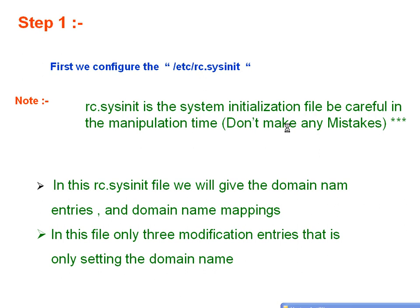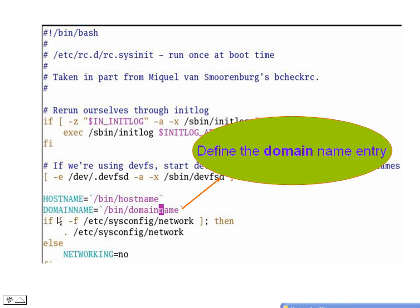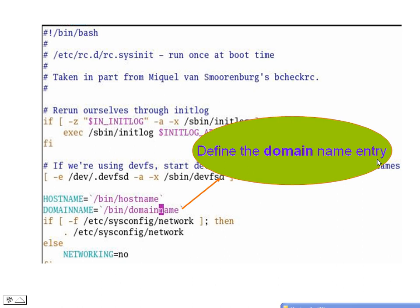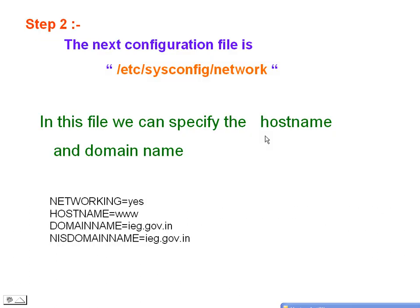The rc.sysinit is the system initialization file, so you should be very careful in manipulating it and not make any mistakes. In this rc.sysinit file we will give the domain name entries and domain name mappings — only three modification entries, which is just setting the domain name. For example, we have to modify: DOMAINNAME=/bin/domainname, which defines the domain name entry. The next change is: action $'Setting domain' $DOMAINNAME, which is done to define the domain name entry.